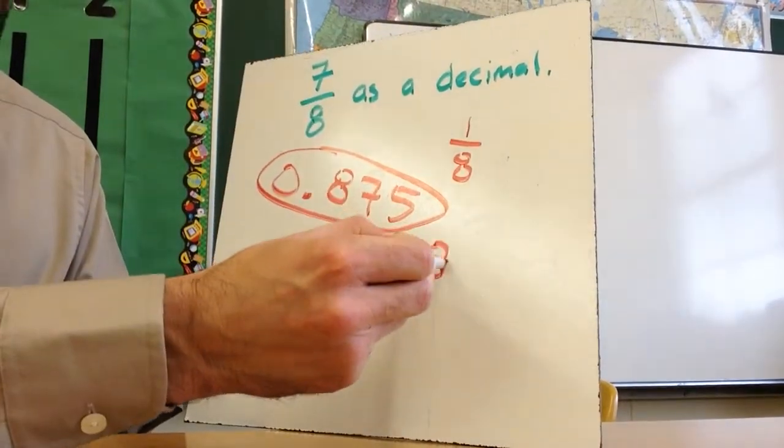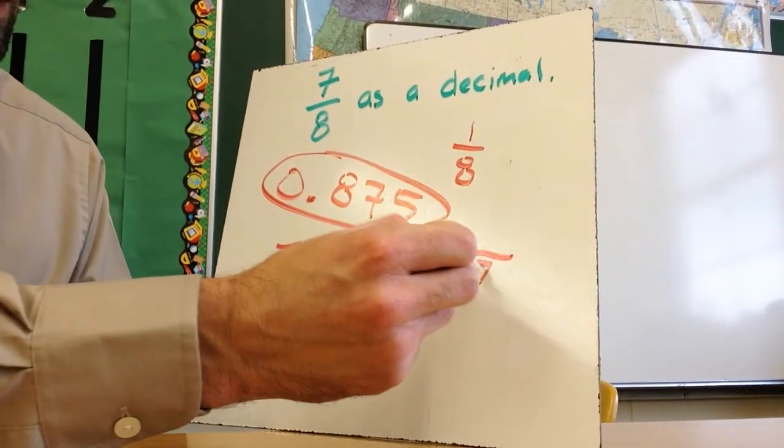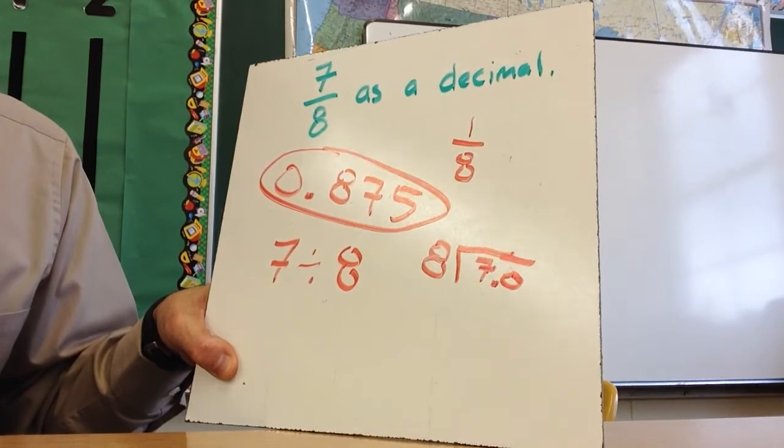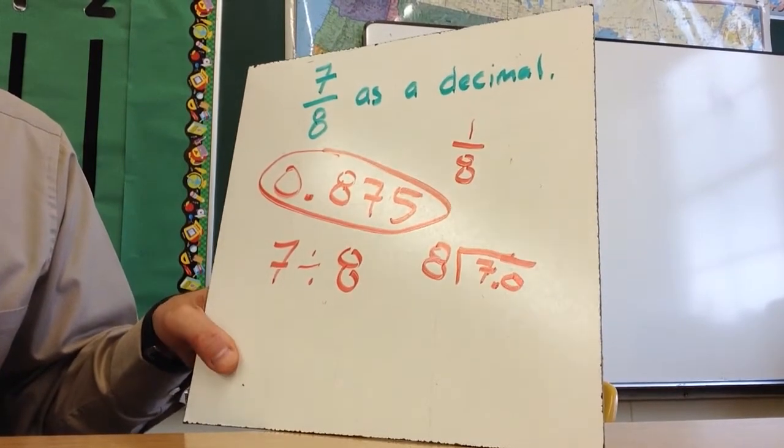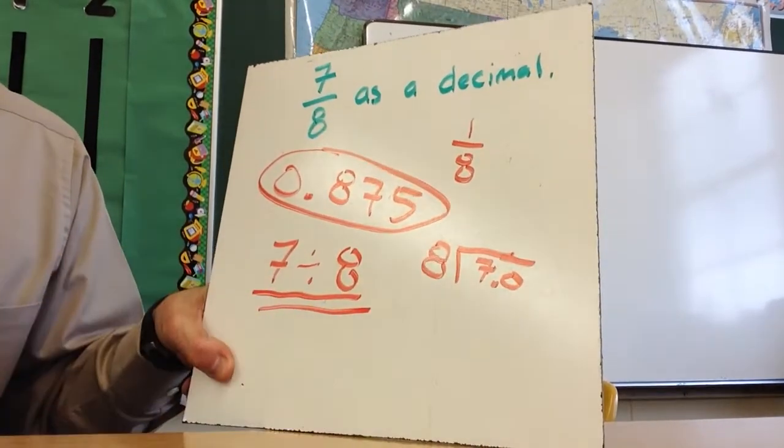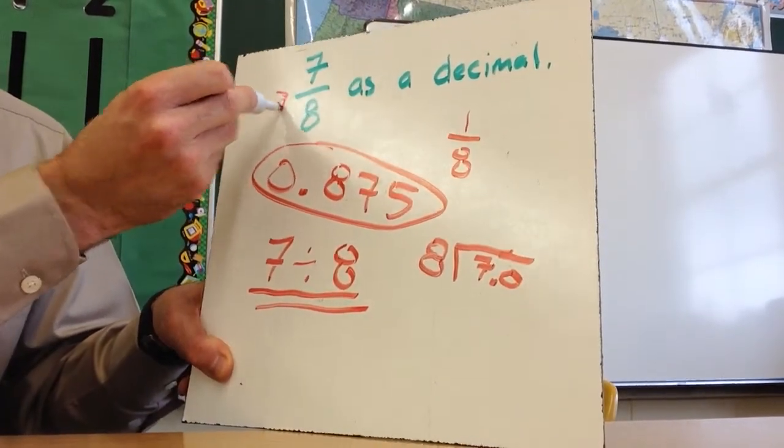And then obviously the longer way that some of you may know how to solve a division problem like this, you could end up dividing and getting 0.875. But you're allowed to use a calculator, so don't be afraid to type this into the calculator as long as you know that this means it's a division problem.